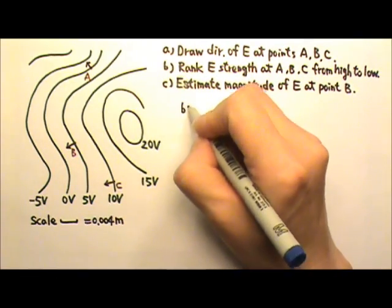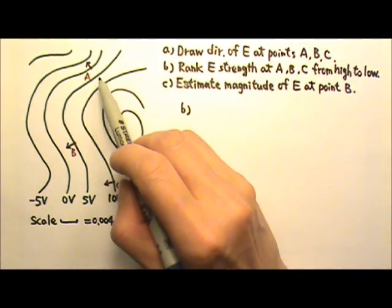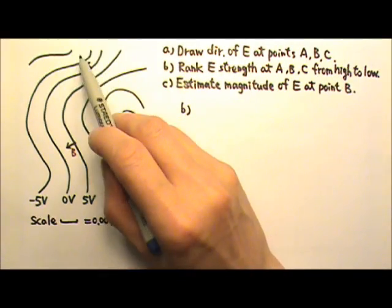Part B: We have to rank the strength of the electric field. The closer the equipotential surfaces are, the stronger the electric field.